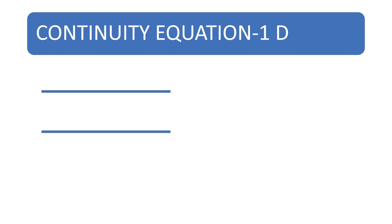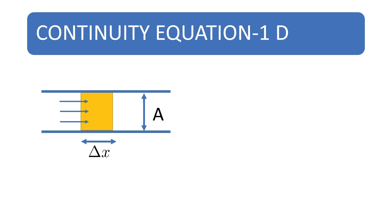If you take a pipe and take a particular length delta x, this has a cross-sectional area of capital A. In this fluid region, fluid enters here and fluid leaves.